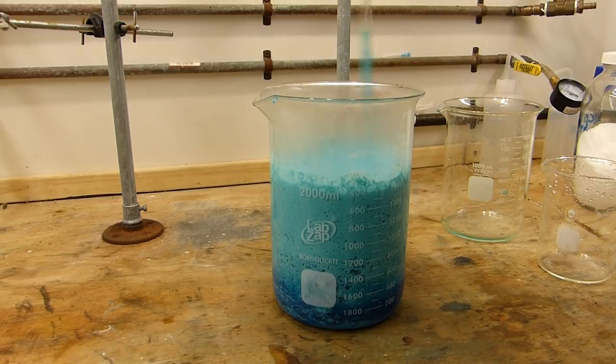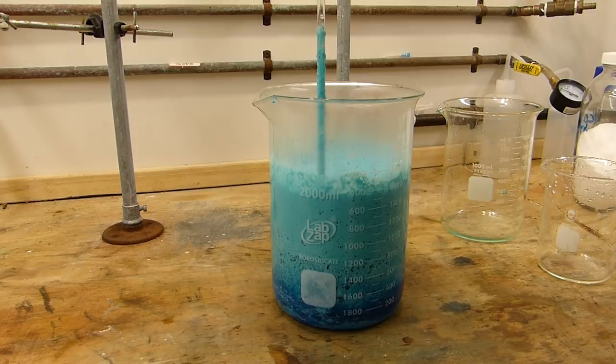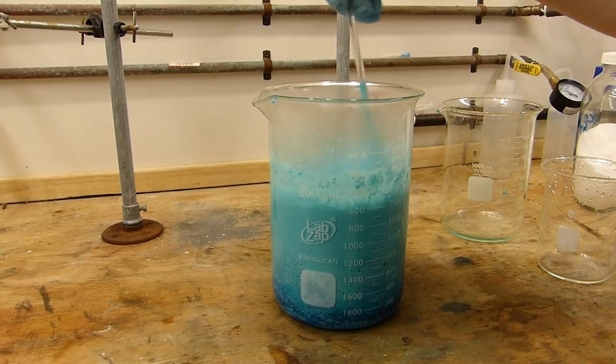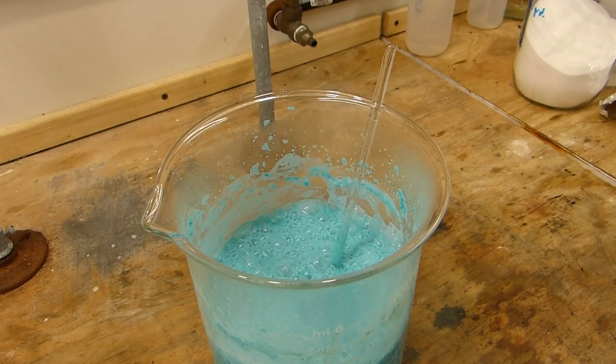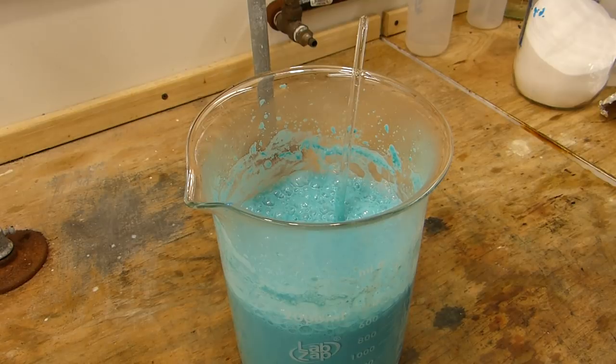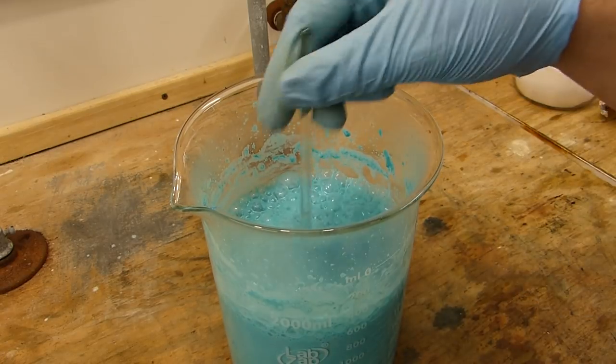This reaction will theoretically make 100 grams of basic copper two carbonate, which is this toothpaste sort of color that's forming here. And I'll just give this approximately 20 minutes to finish reacting while watching the foam. It'll slowly subside over time. And then we can go ahead and isolate the basic copper two carbonate.